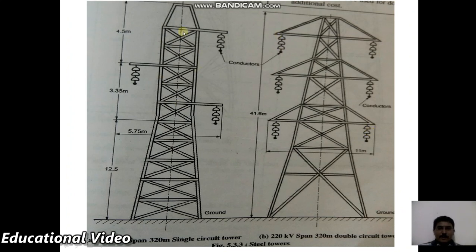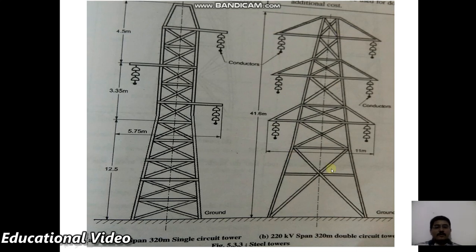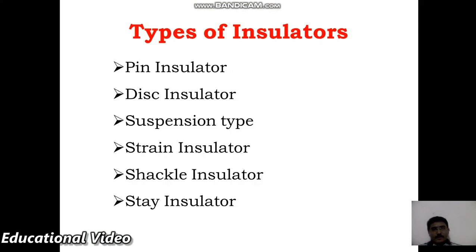On the left-hand side we observe a single circuit tower, and on the right-hand side a double circuit transmission tower. Poles are generally used for distribution purposes, while towers are used for transmission purposes.